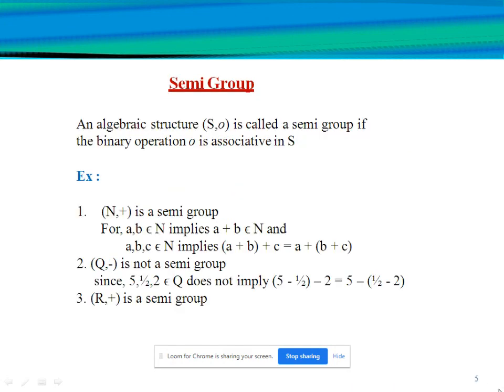Next is semi group. In an algebraic structure (S, ∘), it is called a semi group if the binary operation ∘ is associative in S. For example, (N, +) is a semi group: for a, b belonging to N, a+b also belongs to N, and for a, b, c belonging to N, (a+b)+c = a+(b+c).